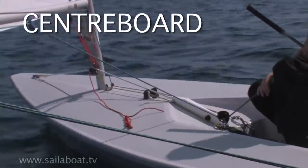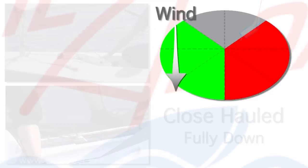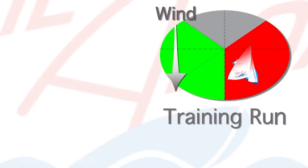Centre board. Starting close hauled, the centre board should be fully down. On a beam reach, it should be about half way up. And on a training run, about three quarters up.